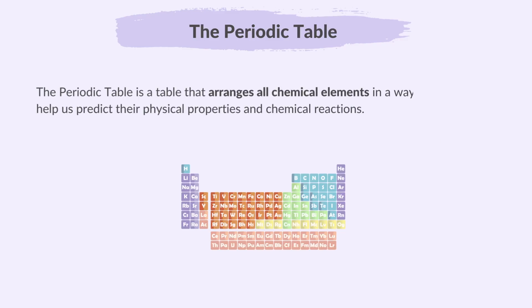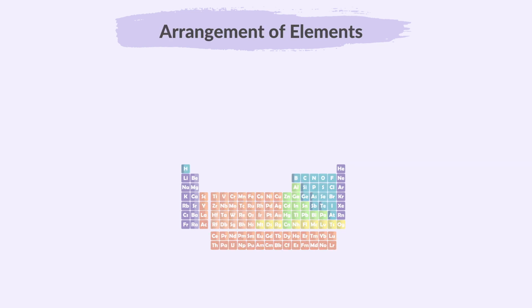The periodic table is a table that arranges all chemical elements in a way that can help us predict their physical properties and chemical reactions. Let's first learn about how these elements are arranged.